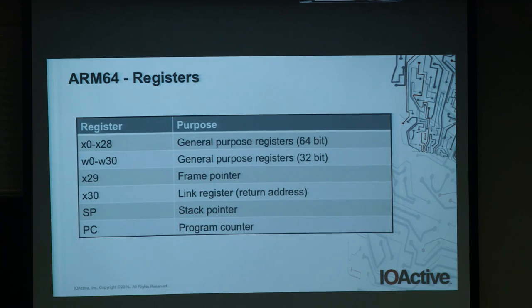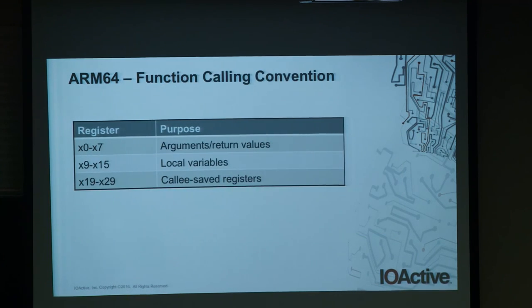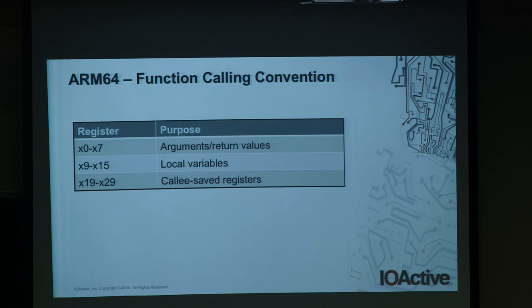ARM64 has many more registers — 64-bit X0–X30 and 32-bit W0–W30 general purpose registers. Arguments and return values are stored in X0–X7 and so on. An entire talk could be given on ARM assembly alone — this is just the Mount Everest view of ARM assembly.